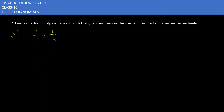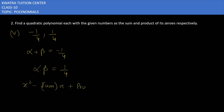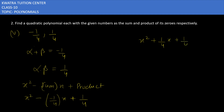Now the fifth part: alpha plus beta is minus 1/4 and alpha dot beta is 1/4. Using the formula x squared minus (sum)x plus product, we get x squared minus (minus 1/4)x plus 1/4, which becomes x squared plus (1/4)x plus 1/4. Taking LCM as 4 and multiplying each term, we get 4x squared plus x plus 1. Eliminating the denominator, your polynomial is 4x squared plus x plus 1.